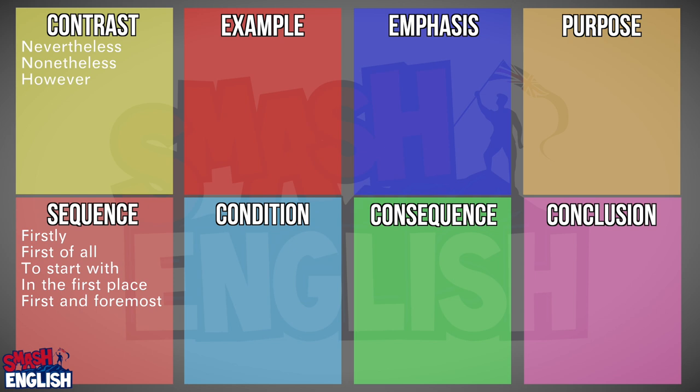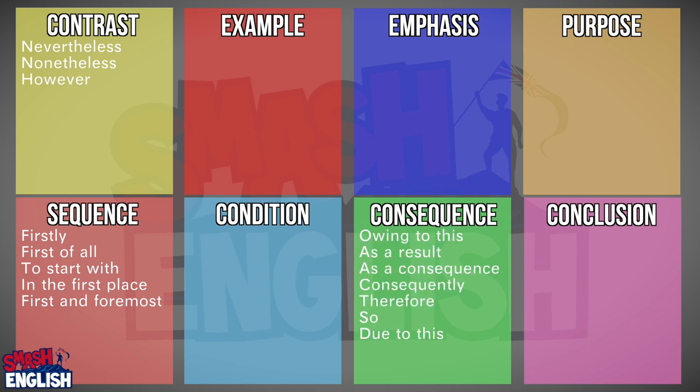So for contrast we have 'nonetheless', 'nevertheless' and 'however'. For sequence we have 'firstly', 'first of all', 'to start with', 'in the first place' and 'first and foremost'. For consequence we have 'owing to this', 'as a result', 'as a consequence', 'consequently', 'therefore', 'so' and 'due to this'. And for conditions we have 'if', 'provided that' and 'insofar as'.